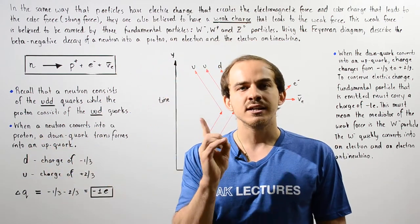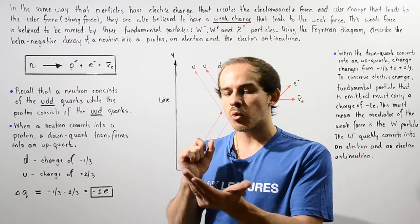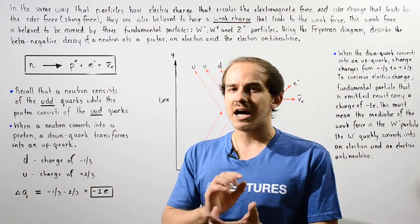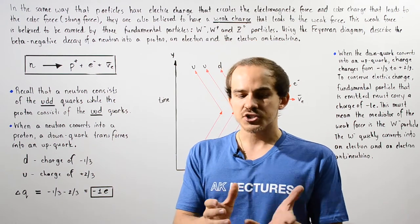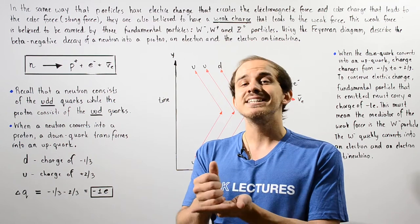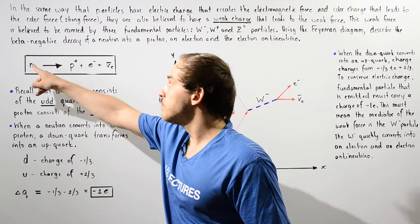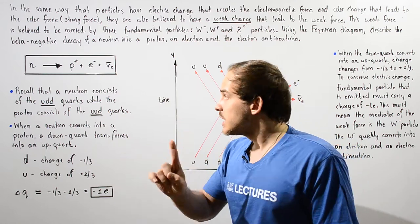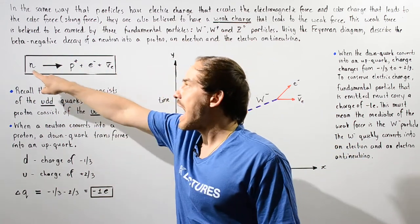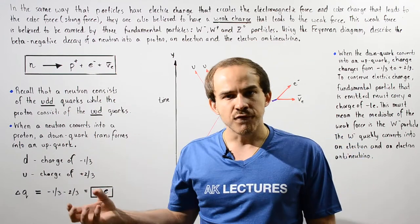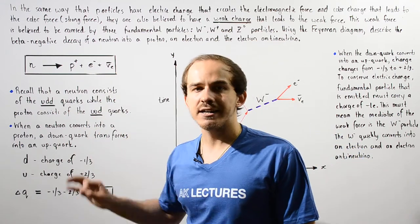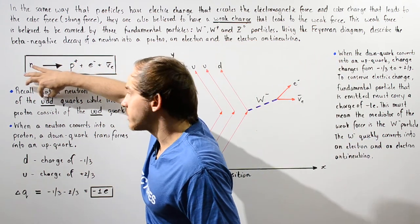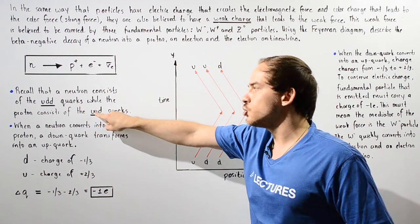Recall that a neutron consists of three quarks: the up quark, the down quark, and the down quark. The proton, on the other hand, consists of three quarks: the up quark, the up quark, and the down quark. So for a neutron to actually transform into a proton, one of the quarks — specifically a down quark of our neutron — must actually transform into the up quark that is found in our proton. So this middle down quark has to transform into the up quark.